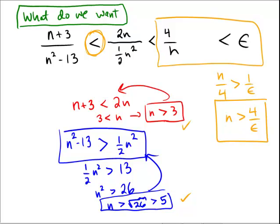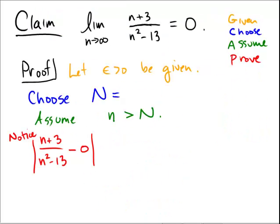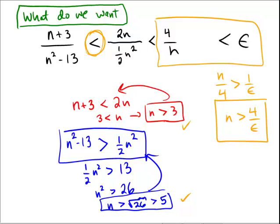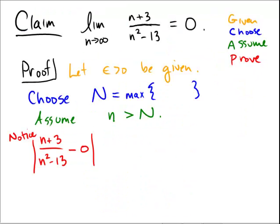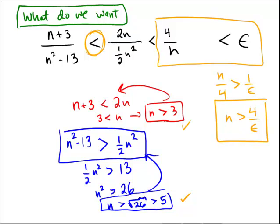So now we're actually ready for the proof. We're going to come over here and we're going to have to say, let capital N be the maximum. We need it to be large enough. And how large do we need it? We have to be bigger than 3, bigger than 5, and bigger than 4 over epsilon. So we're going to choose N to be the maximum of 5 and 4 over epsilon. I don't need the 3 because I'm choosing it to be bigger than 5 to ensure that both of these hold. And then the other piece makes sure that the inequality is going to hold.